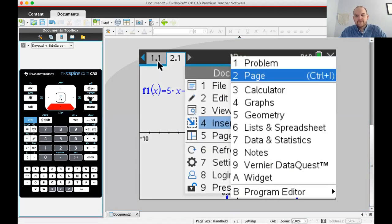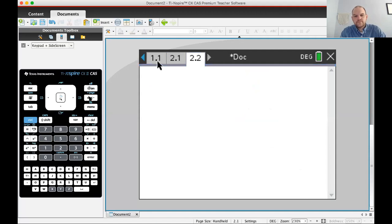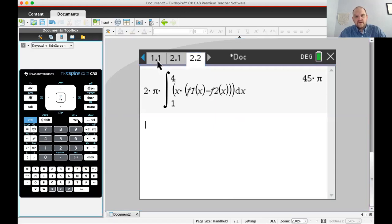So f1 is on top. Doc 4 calculator 2π integral x times quantity f1(x) - f2(x). You can use the var key for those and you should. x comma 1 to 4. So I get exactly 45π. You can see when I press the var key, those were available. You should do that like all the time. It'll save you a ton of time. So I think the volume of this thing is 45π.